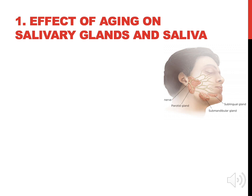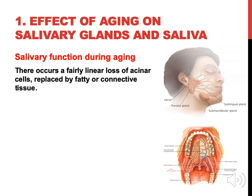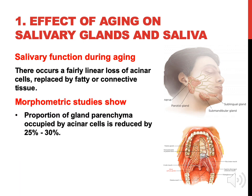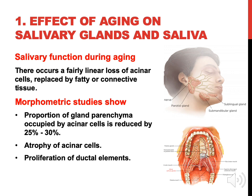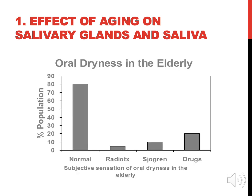Effect of aging on salivary gland and saliva: during aging, there occurs a fairly linear loss of acinar cells replaced by fatty or connective tissue. Morphometric studies show the proportion of gland parenchyma occupied by acinar cells is reduced by 25 to 30%. There is atrophy of acinar cells and proliferation of ductile elements, and some degenerative changes. However, recent studies showed that the composition and quantity of saliva in the elderly is not changed significantly.